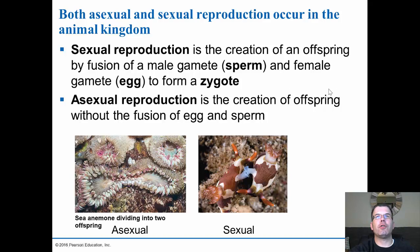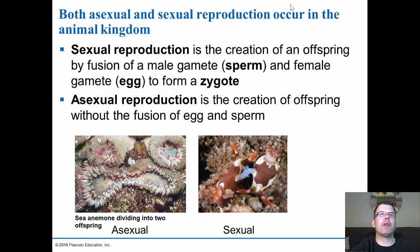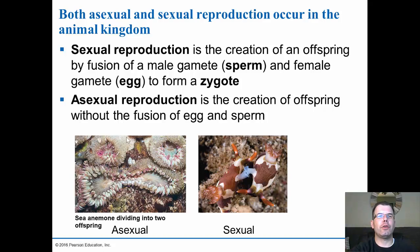Sexual reproduction is the creation of offspring by the fusion of sperm and egg — the mixing of genes to form a zygote. Asexual reproduction is the creation of offspring without fusion of egg and sperm, typically done through mitosis. Sexual reproduction uses meiosis, reducing chromosome number and then fusing them back to get the full complement, while asexual reproduction uses mitosis — budding, fragmentation, or other methods.